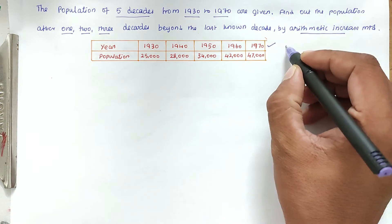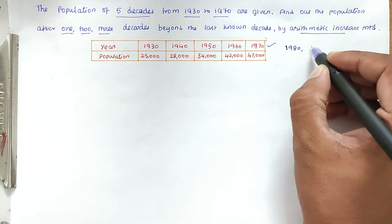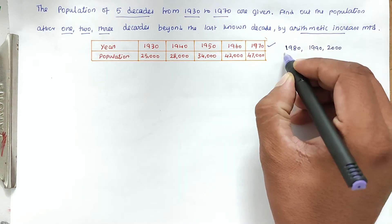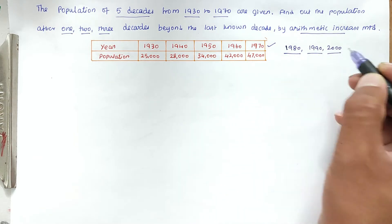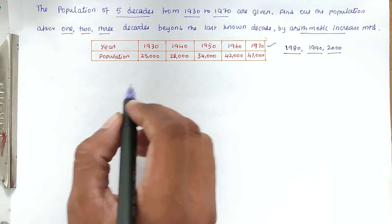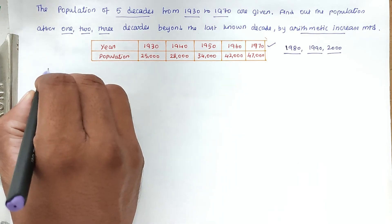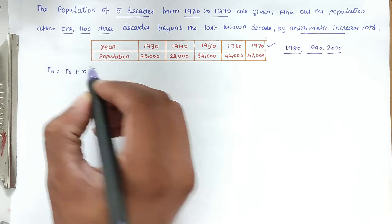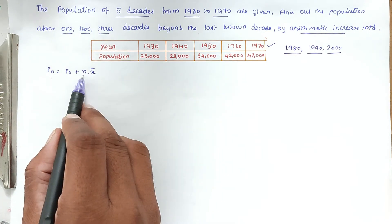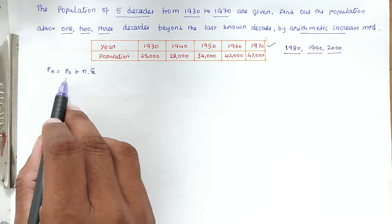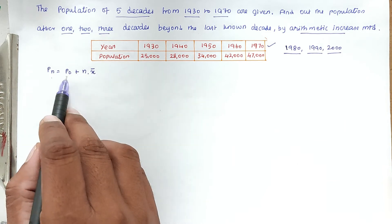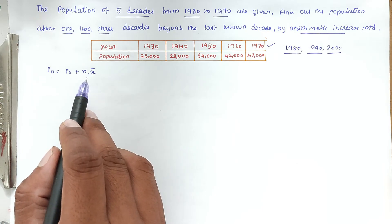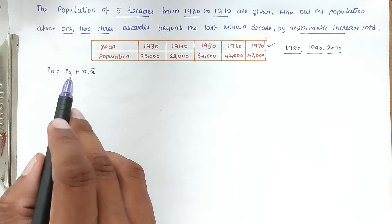We have to find the population for 1980, 1990, and 2000. The formula used is: Pn = P₀ + n × x̄, where n is the number of decades, P₀ is the last known decade population, and x̄ is the average increase in population per decade.